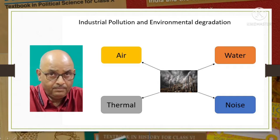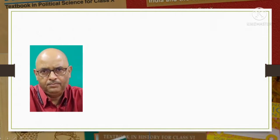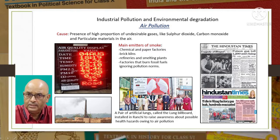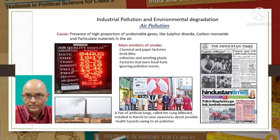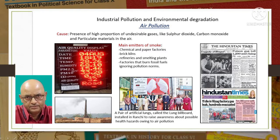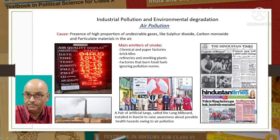Let us begin with air pollution. Air pollution is caused by the presence of a high proportion of undesirable gases such as sulfur dioxide and carbon monoxide. Then there are particulate materials that act as air pollutants. Particulate materials, commonly called PM, are a very fine mixture of solid particles or liquid droplets that remain suspended in the atmosphere for some period of time.